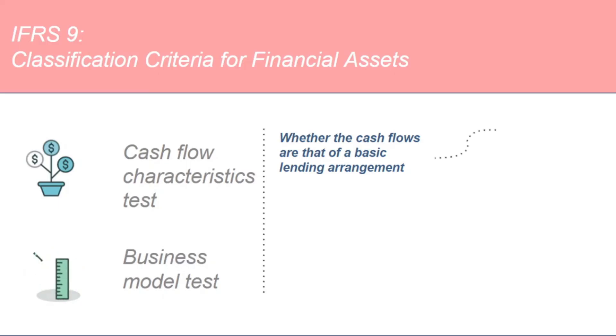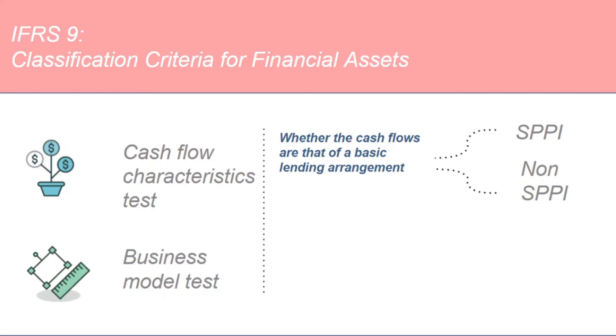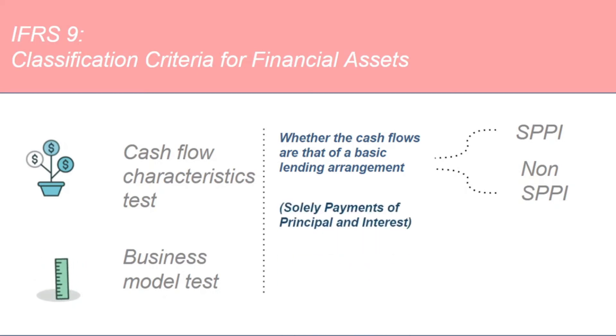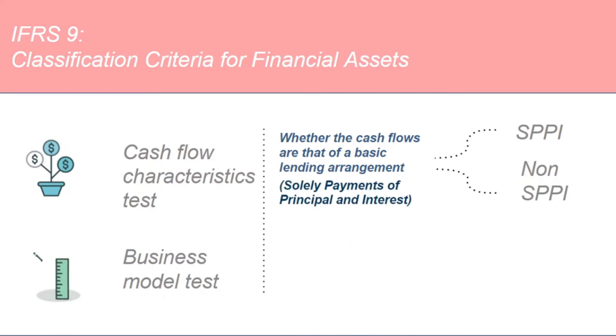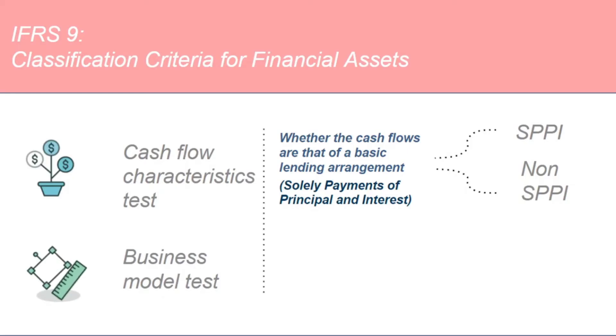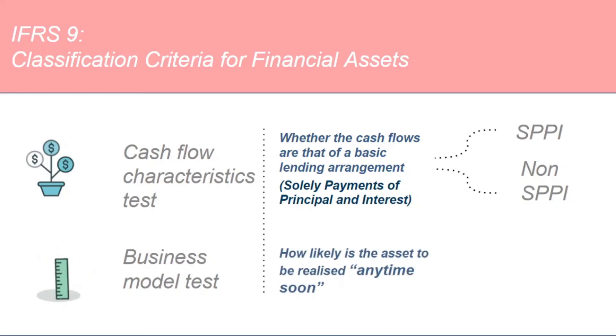It's the same thing we have roughly referred to as a debt instrument in our previous examples. The result of this cash flow characteristics test is binary — it's a yes or a no: either SPPI or non-SPPI. SPPI simply means solely payments of principal and interest, and this is the cash flow characteristic of those instruments that are SPPI. The second test is about how the instrument is managed, or how the portfolio in which that instrument resides is actually managed, and this test determines how likely we are to sell a particular asset anytime soon.